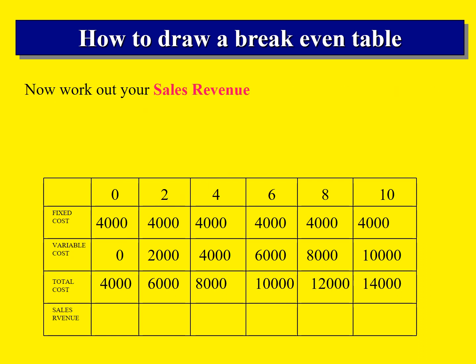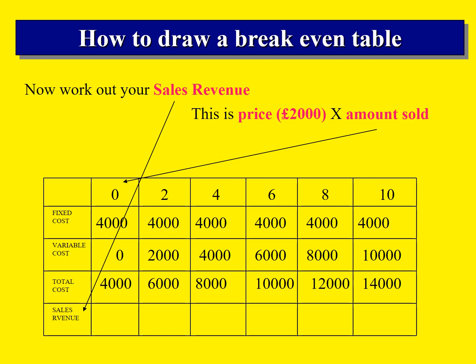The final line on our break-even table is working out our sales revenue — this is the amount of money we have earned. We're going to do this by taking the price, which was £2,000 per crate, and multiplying it by the amount sold. So if I make none at £2,000, I'm going to earn nothing. If I made two and sold them for £2,000, I am going to get £4,000 in sales revenue. If I make four, that's £8,000; then £12,000; £16,000; and finally £20,000.